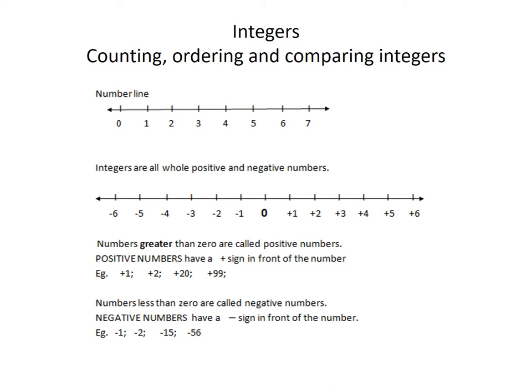Now, integers are all whole numbers that are either positive or negative. If you look at the next number line, you will see zero in the middle. Then you will see positive one, positive two, positive three, and so on on your right. Then if you go to the left, you will see negative one, negative two, negative three, negative four, and so on.